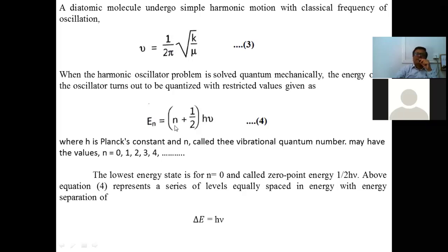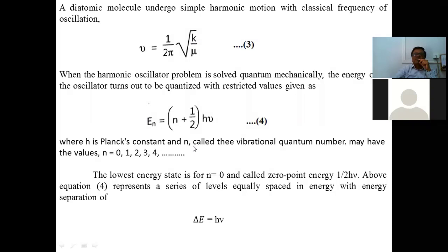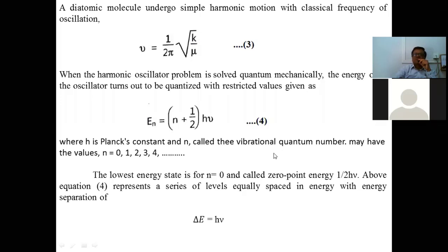For n = 0, the energy is fixed and quantized; for n = 1, the energy is different but fixed and quantized. Therefore, the energy of this vibrational oscillator is En = (n + ½)hν. This is Equation 4, where h is Planck's constant, ν is the frequency given by Equation 3, and n are the vibrational quantum numbers with values n = 0, 1, 2, 3, 4 and so on. The lowest energy state at n = 0 is called zero-point energy.